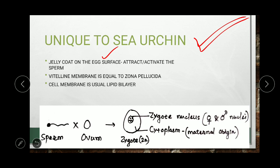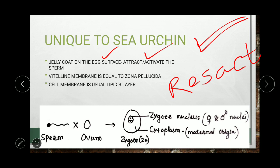Now, what phenomena are unique to sea urchin fertilization? The jelly coat on the egg surface attracts and activates the sperm. The jelly coat contains a protein called resact (R-E-S-A-C-T). This resact protein is a chemo-attractant released by the egg into the water, which attracts the sperms toward the egg.